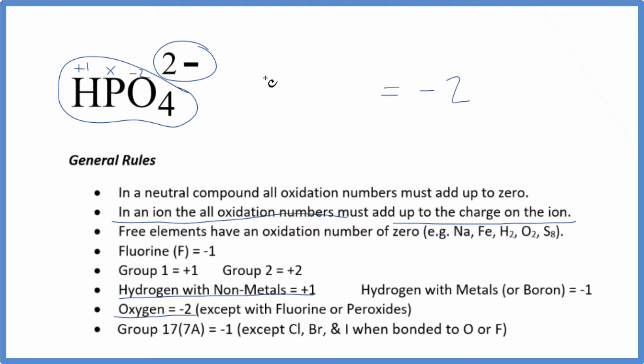So we could just say 1 plus X, 4 times minus 2 is minus 8, equals minus 2, the charge on the hydrogen phosphate ion.